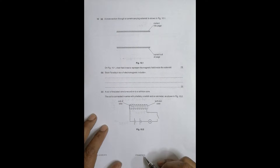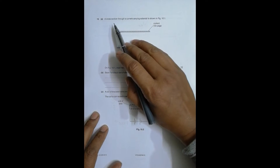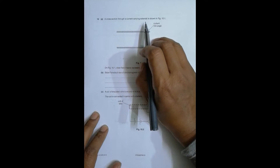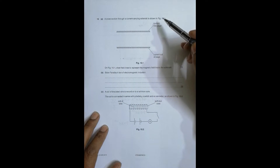This question is from the 2019 February/March session, question number 42, which appears as question number 10 here. This question concerns the chapter on magnetic fields as well as electromagnetic induction. It says that the cross-section through a current-carrying solenoid is shown in figure 10.1.